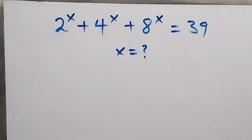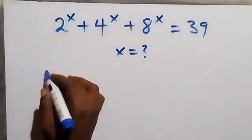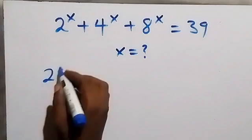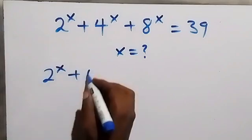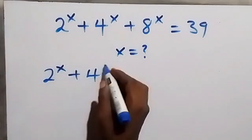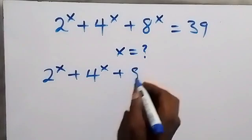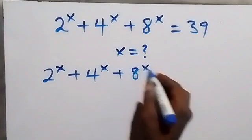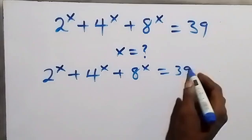Hello, you are welcome. How to solve this nice Olympiad problem: we are given 2 to the power of x plus 4 to the power of x plus 8 to the power of x equals 39, and we are finding the value of x.